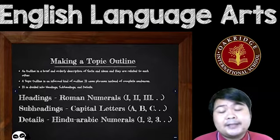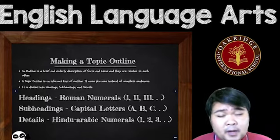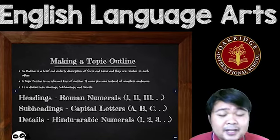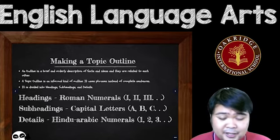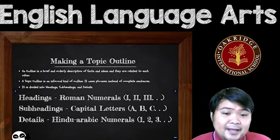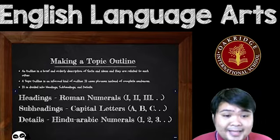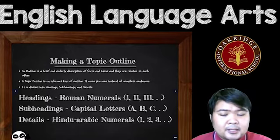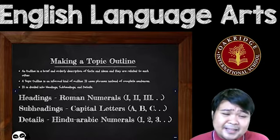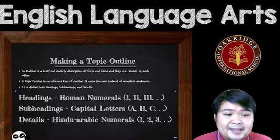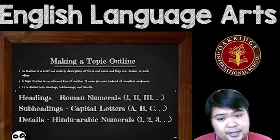For example, later on when you grow up — when you're already in high school or in college — and you're going to create your thesis, you would need to make a topic outline. An outline is basically a brief and orderly description of facts and ideas that are related to each other.